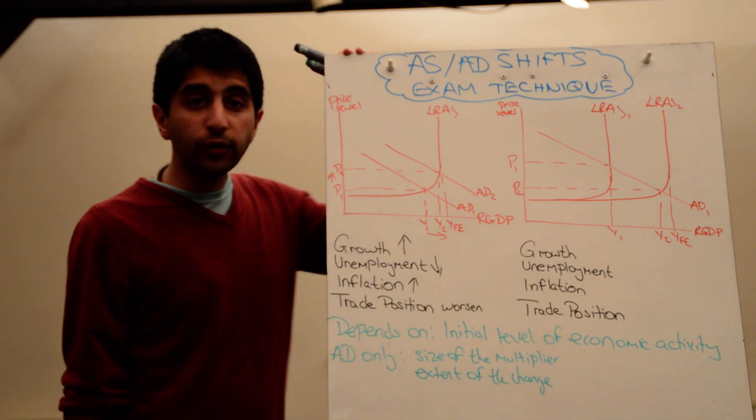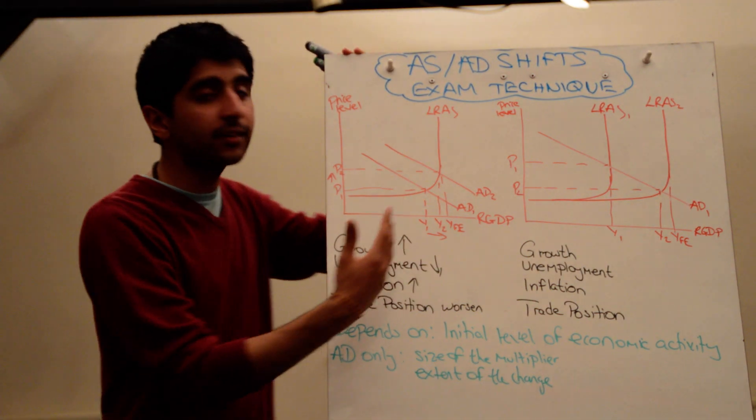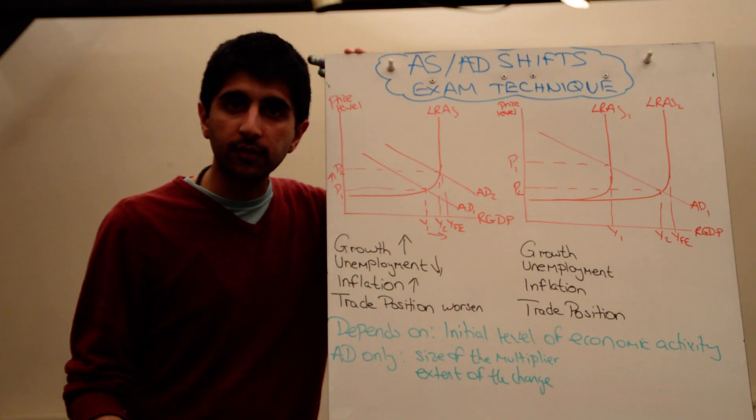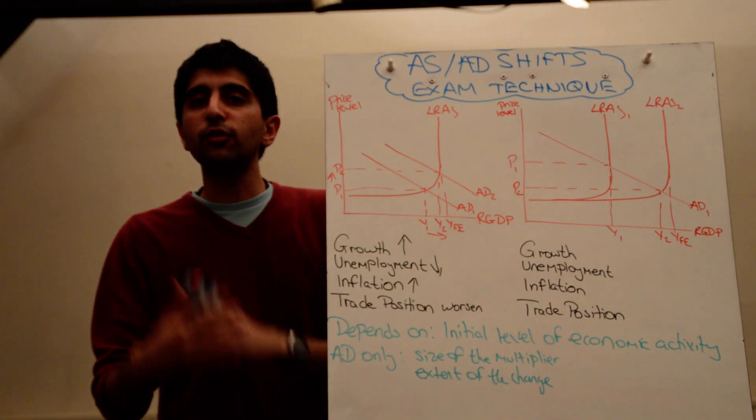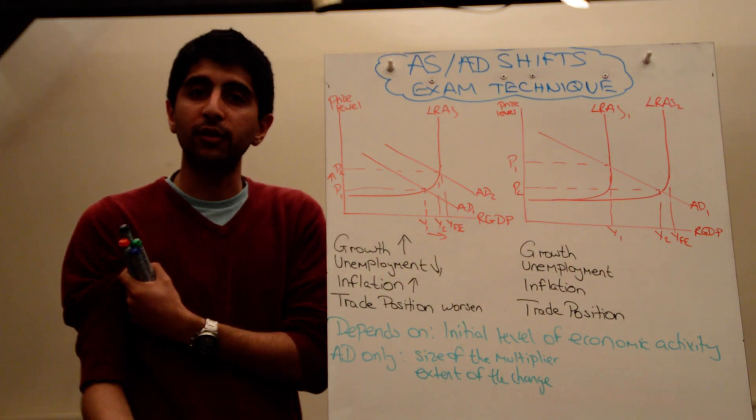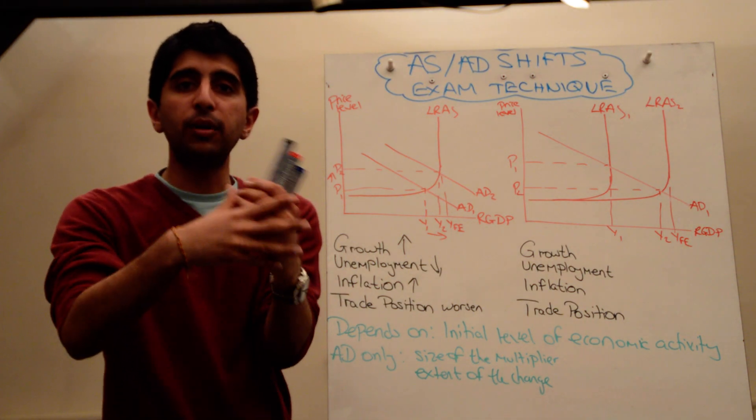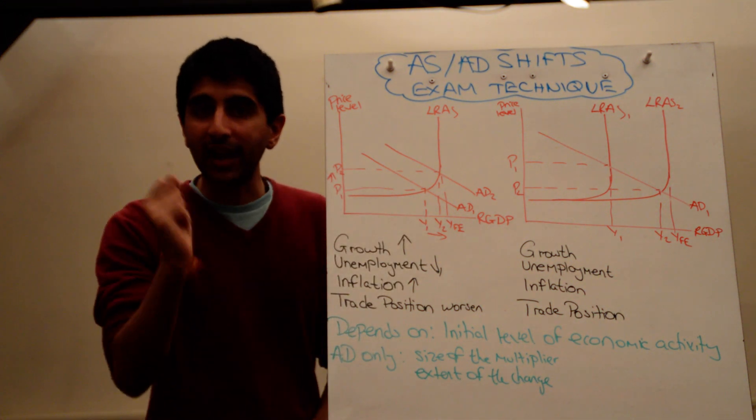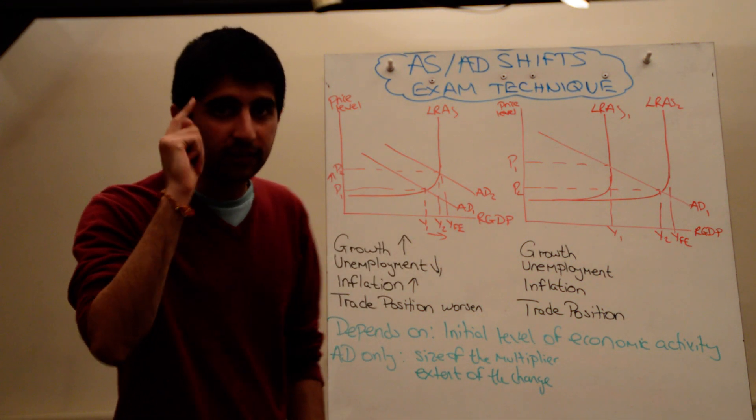Why does growth increase? Growth increases because firms will react to this increase in demand by producing more goods and services. There is more demand out there in the economy. There is a greater incentive for firms to produce more goods and services to meet that extra demand. Therefore, output in the economy increases. Therefore, there is an increase in real GDP. That's how you need to explain it. Learn that properly.